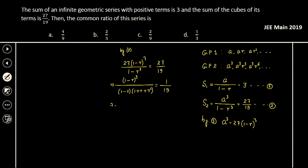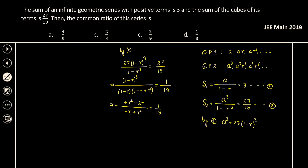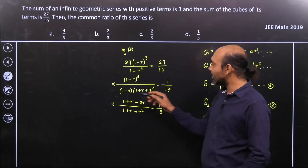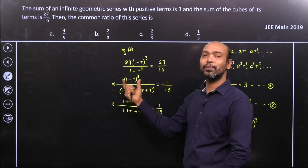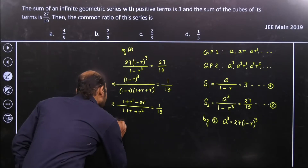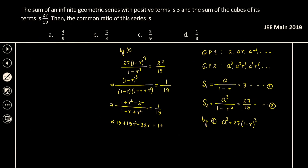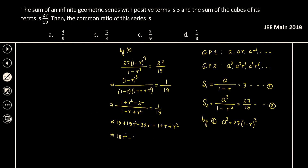The (1 − R) factor cancels, leaving (1 − R)² in the numerator. Expanding (1 − R)² gives (1 + R² − 2R). So we have (1 + R² − 2R) divided by (1 + R + R²) = 1/19. Cross-multiplying: 19 + 19R² − 38R = 1 + R + R². Rearranging gives the quadratic 18R² − 39R + 18 = 0.